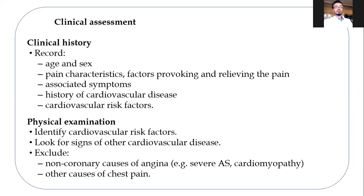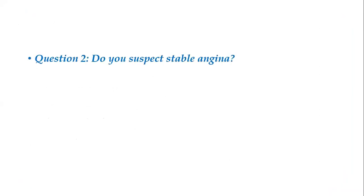In physical examination, identifying cardiovascular risk factors, looking for signs of other cardiovascular disease, and excluding other possible causes of angina that arise from either the muscle or from the valves — like severe aortic stenosis or cardiomyopathy — and other causes of chest pain. Now, in that patient, do you suspect stable angina?